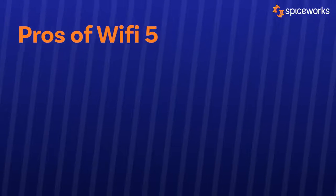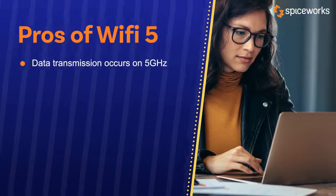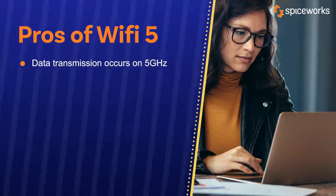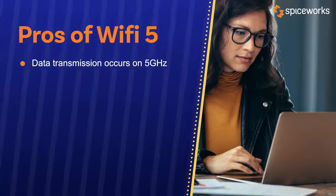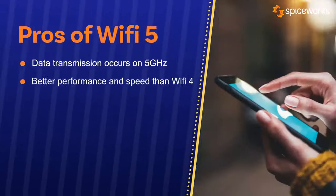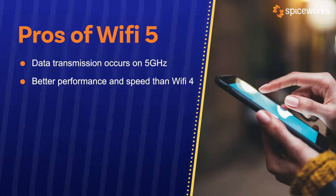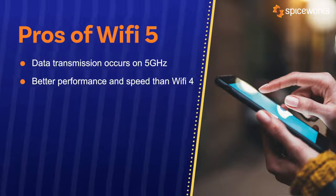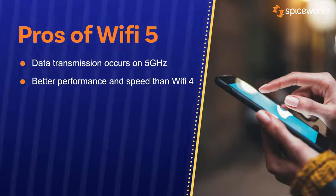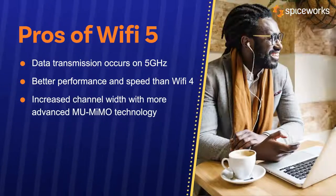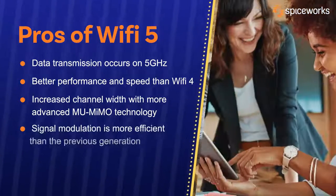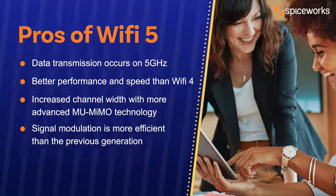Let's first understand the pros of Wi-Fi 5. Wi-Fi 4 used 5 gigahertz along with the 2.4 gigahertz band, which is congested as many devices and wireless networks use that radio frequency. Wi-Fi 5 tries to solve this problem using a different, less congested frequency channel — the 5 gigahertz band. Wi-Fi 5 has better performance and speed than its predecessor Wi-Fi 4, due to a connection speed of 6.9 gigabits per second. This is a huge advantage considering that a few years ago, devices could only dream of a few bits being transferred per second. Due to increased channel width, Wi-Fi 5 allows a large amount of data to be easily transferred from up to 4 users. Signal modulation of Wi-Fi 5 is more efficient than Wi-Fi 4.